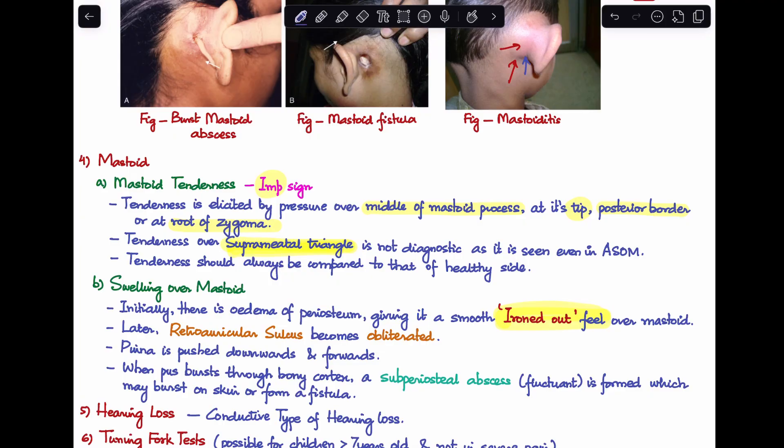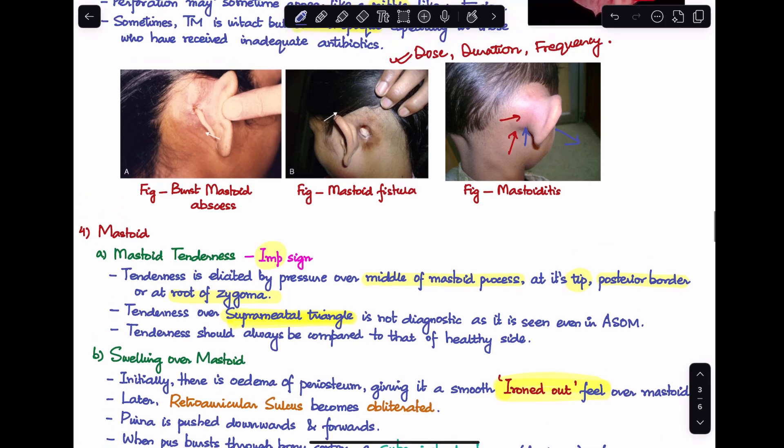When pus breaks out through the bony cortex, it leads to subperiosteal abscess, which can burst to form a fistula. The first image shows a burst mastoid abscess, and the second image shows a mastoid fistula.